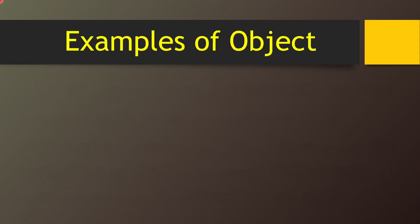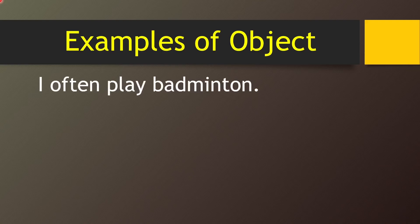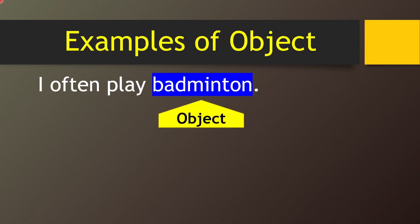Now let me give you some examples of object. I often play badminton. Here, play is the verb — play what? Badminton. So badminton is receiving the action here, and badminton is the object in this sentence.